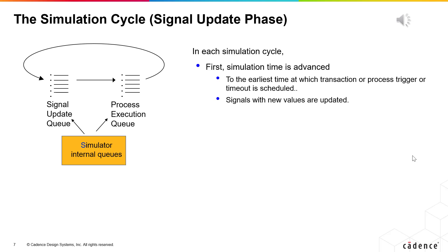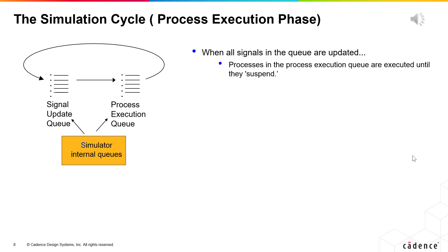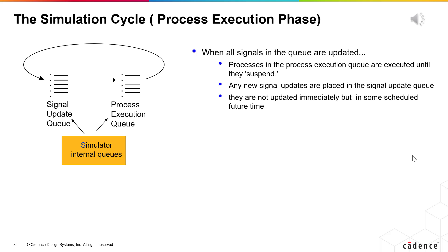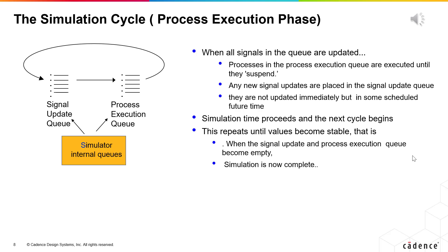Each simulation cycle consists of a signal update phase followed by a process execution phase. First, simulation time is advanced to the earliest time at which a transaction or process trigger or timeout is scheduled. Signals with new values are updated, which may result in events. Process sensitivity lists are checked to see if any of them are triggered. Triggered processes are placed in the process execution queue. When all signals in the queue are updated, all processes in the process execution queue are executed until they suspend, and signals to be updated due to process execution are placed in the signal update queue. These updates are not made immediately but at some scheduled future time. One cycle is now complete. Simulator time advances and the next cycle begins. This repeats until values become stable, i.e., until the signal update and process execution queues become empty. Simulation is now complete.